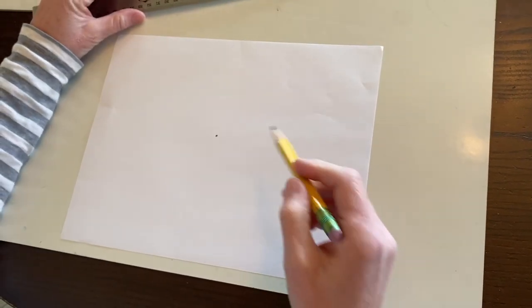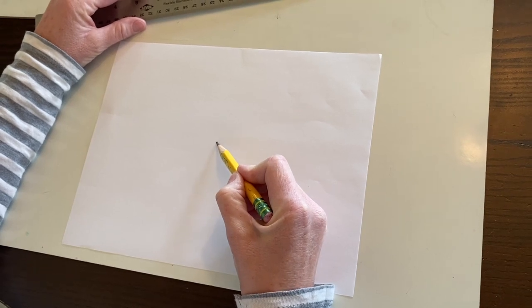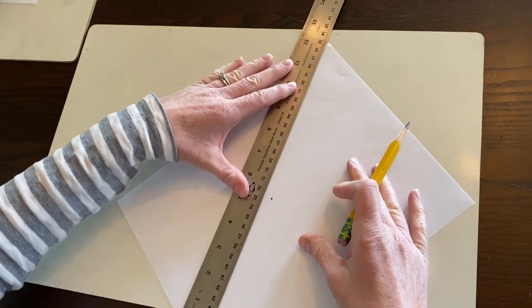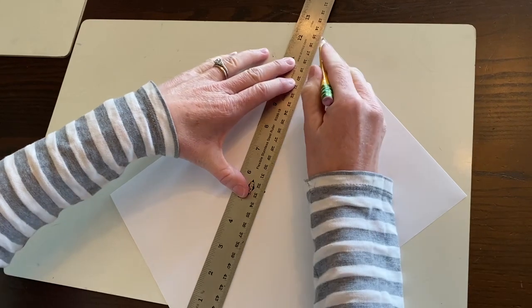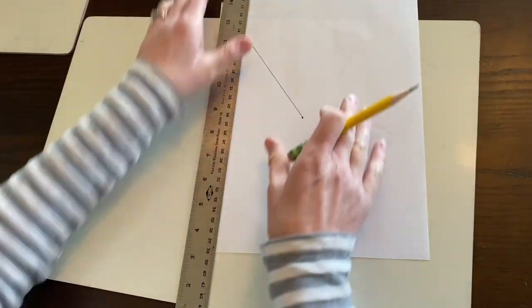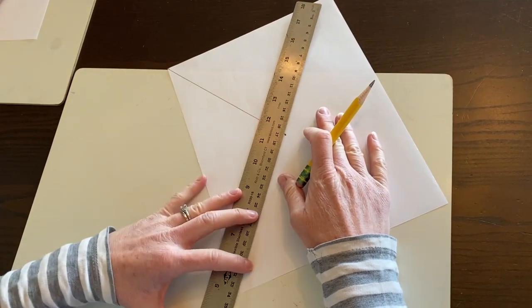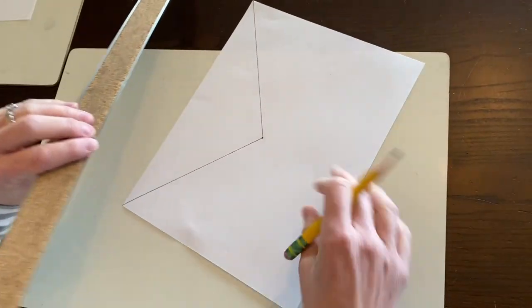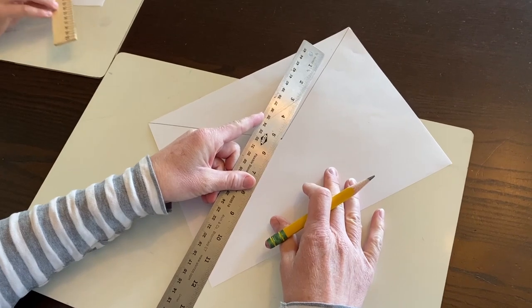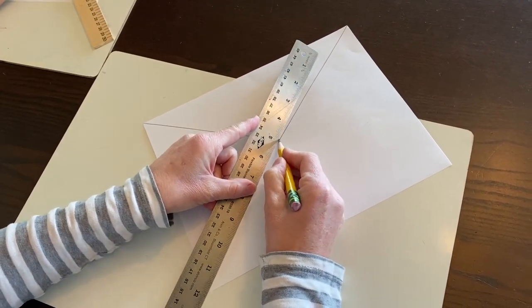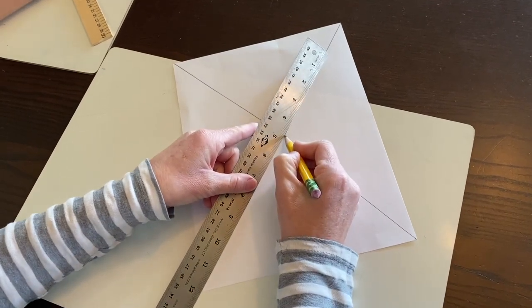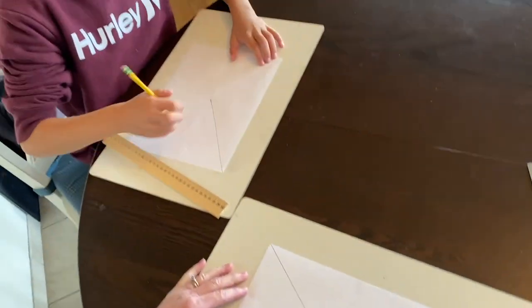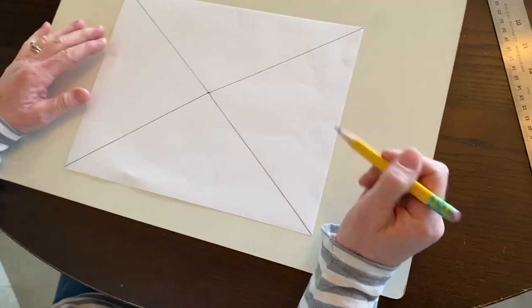Next thing we're going to do is we are going to make four diagonal lines radiating out from our center point. So we go from the center straight to the edge. And like I said before, whatever size paper you have is fine because this works for any size paper. One, two, three, and four.